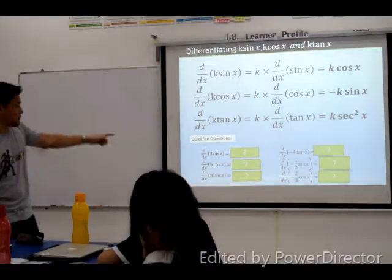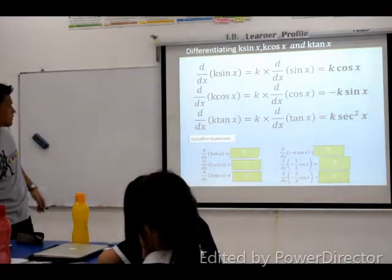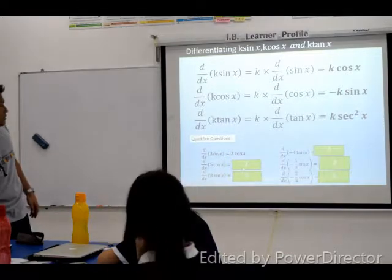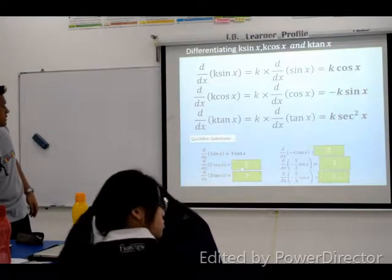Jacqueline, give me the first one. Three, four, seven — cosine x, good. Five.